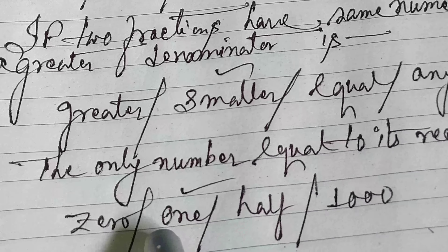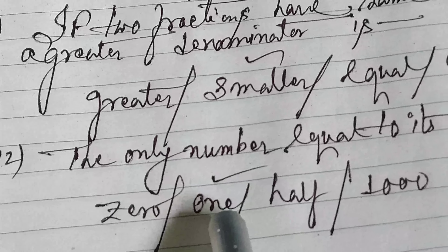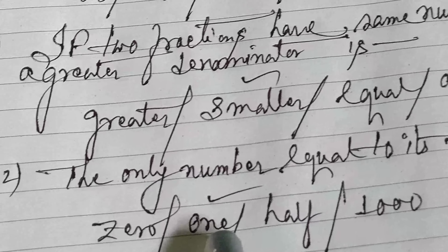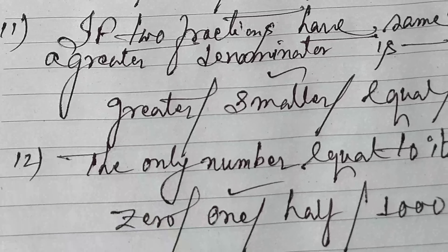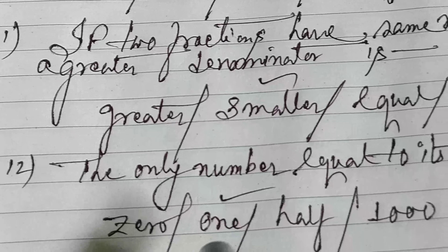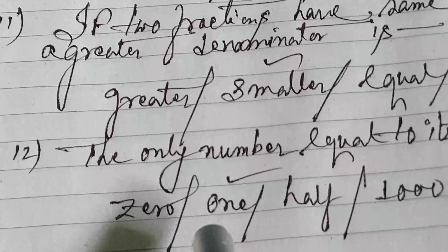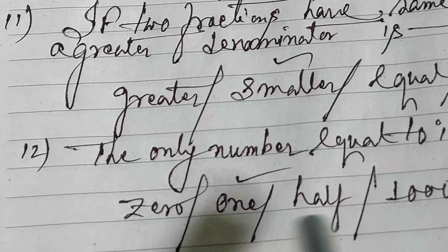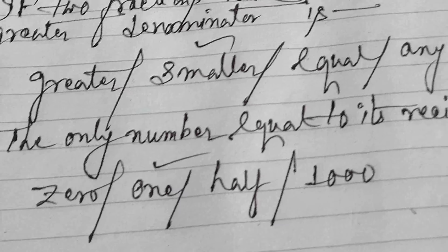If two fractions have the same numerator, the one with a greater denominator is smaller than the other. The only number equal to its reciprocal is 1 — kyunki 1 ka reciprocal karenge to humko 1 hi milega. That's why the answer is 1.